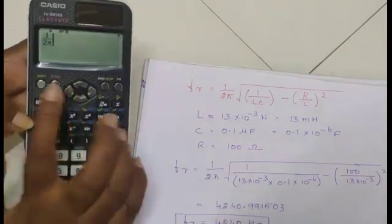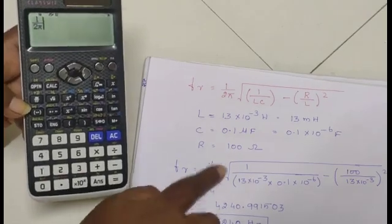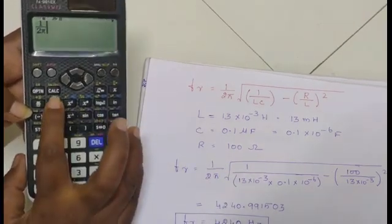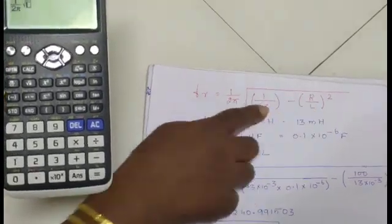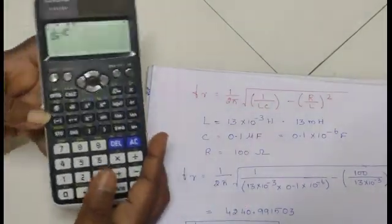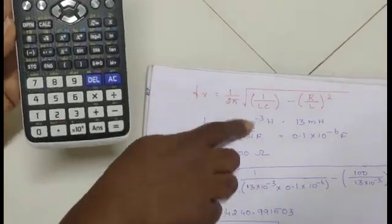And then, we should come right side. Press this button. Now I am in this position. We should take the root value. You see here in this root also, we have 2 terms: 1 by LC minus R by L whole square. First 1 by LC.